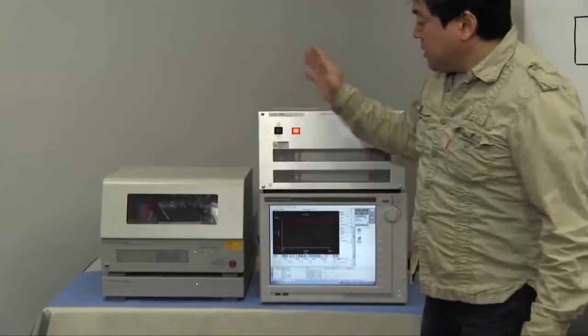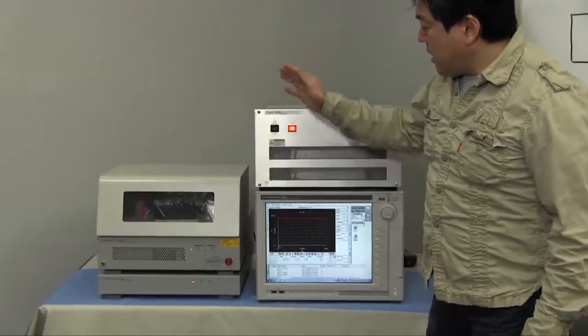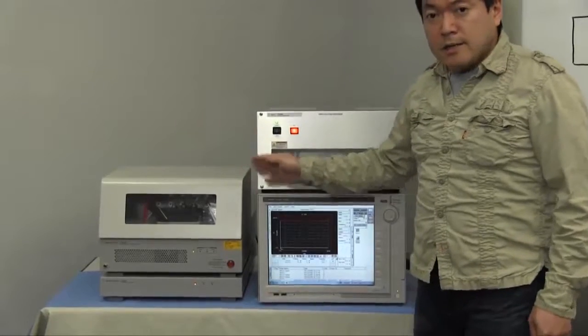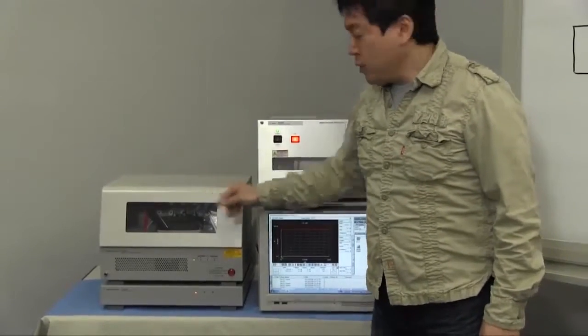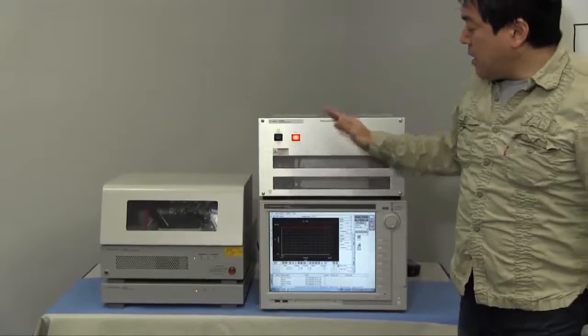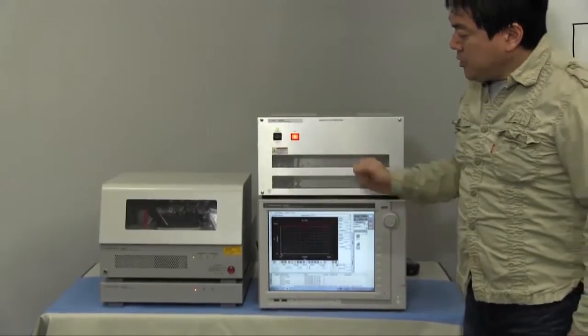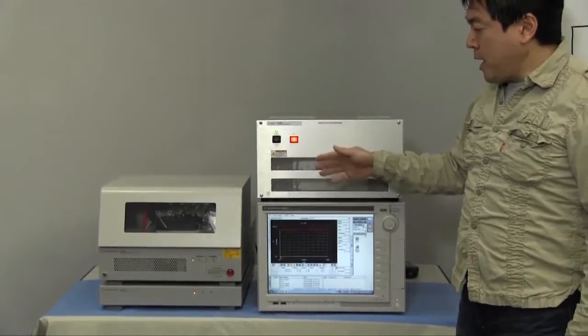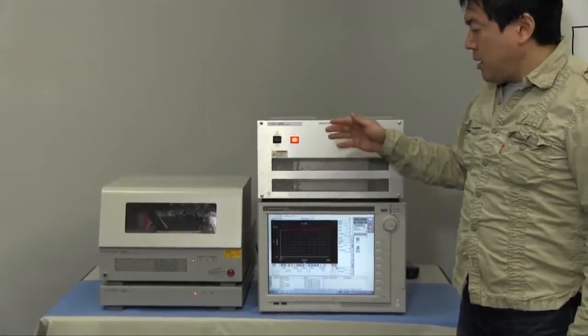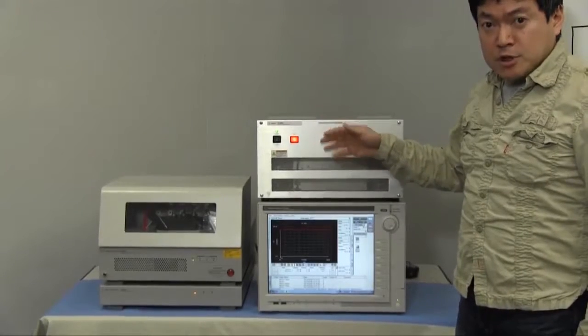Okay, so since this fixture has interlock function and also it has a shield, by using this configuration system, you can measure breakdown voltage safely without a danger of electrical shock.